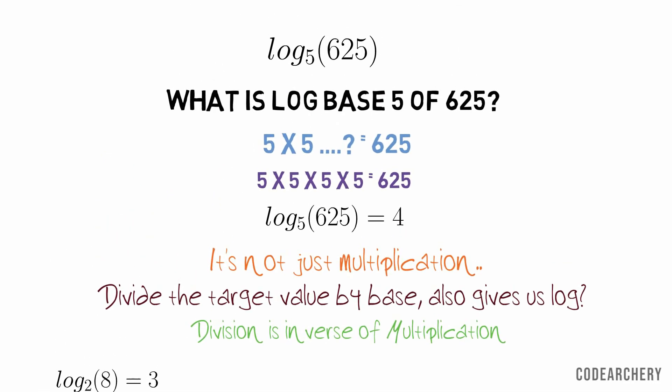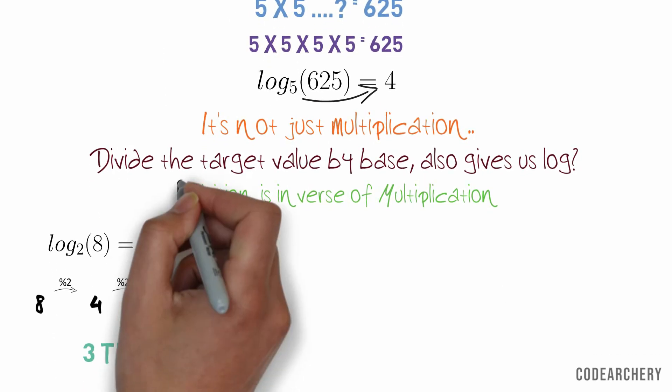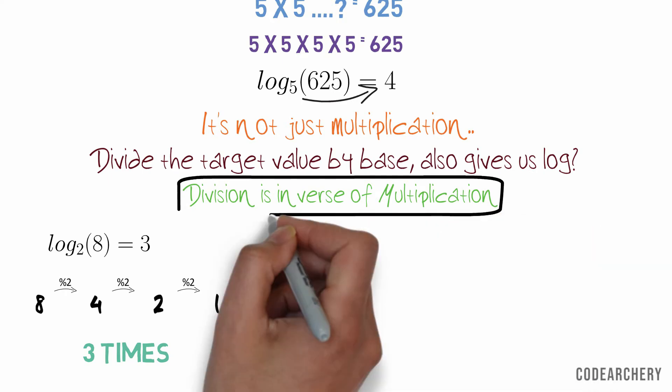Similarly, if we divide 625 by 4, we have to perform division operation 4 times. Because division is inverse of multiplication.